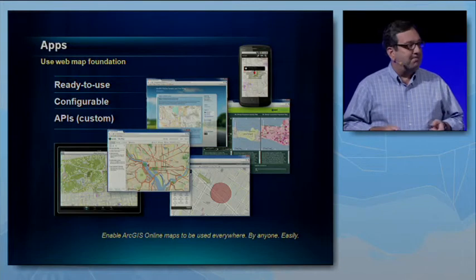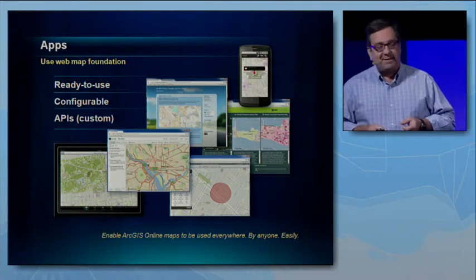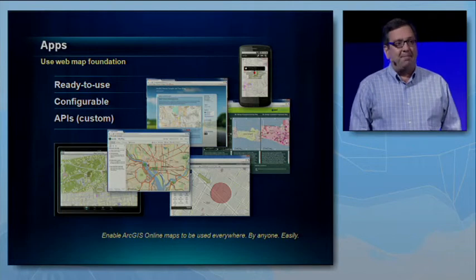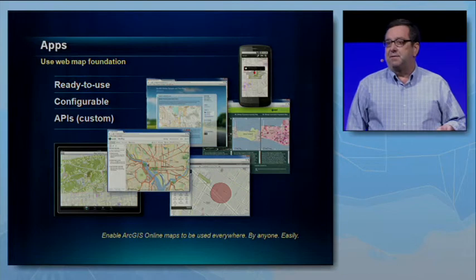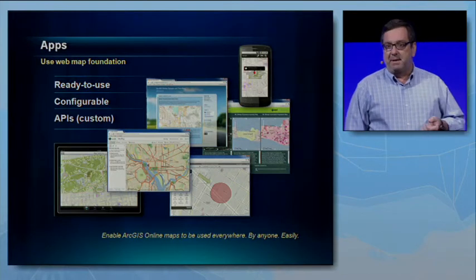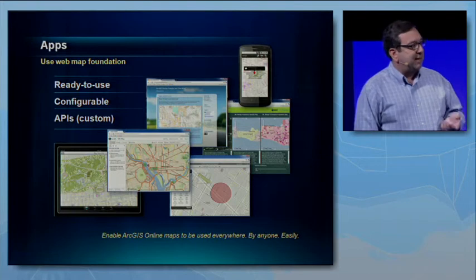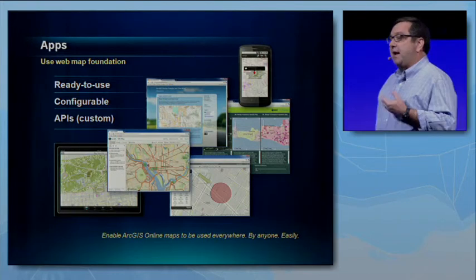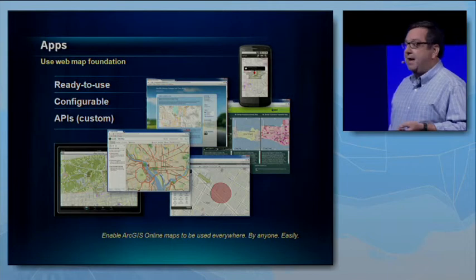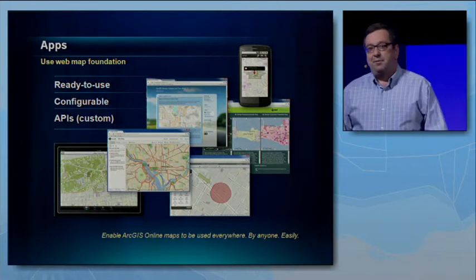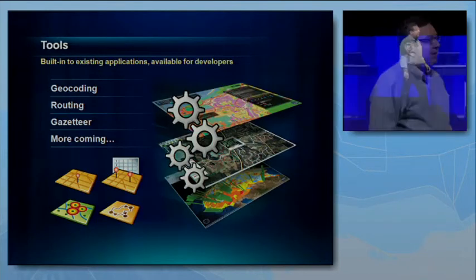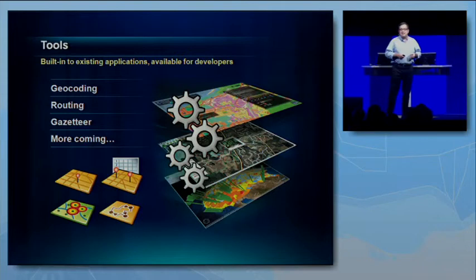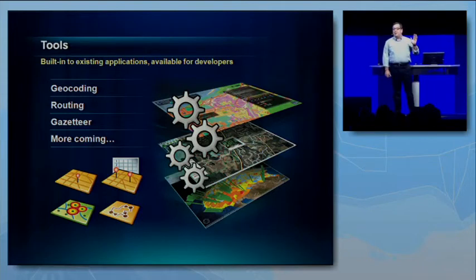One thing that's very important about all of these applications is that they use the same web map foundation. The web map is actually a specification, and we're evolving this specification. What it enables is ArcGIS Online maps to be used everywhere, by anyone, and easily. ArcGIS Online also has tools — many are built into the user experience and also available for developers. We're doing lots of work in this area, so expect more.